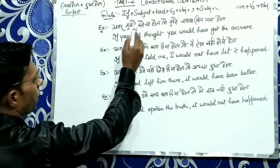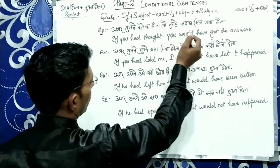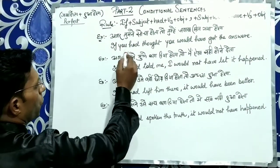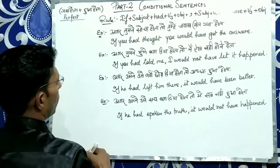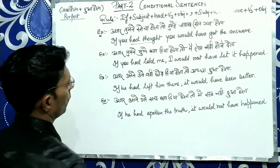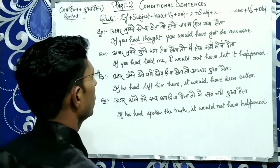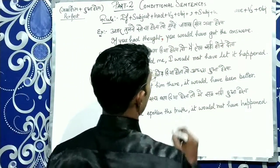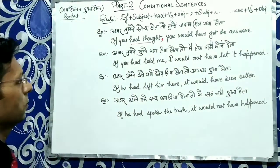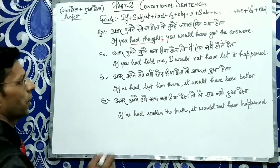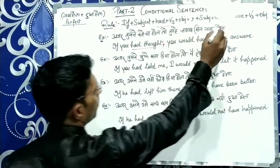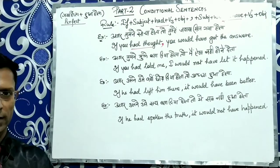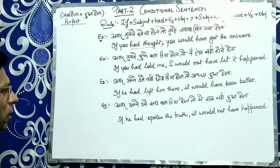Example: अगर तुम्हें सोचा होता तो तुम्हें जवाब मिल गया होता — If you had thought, you would have got the answer. So in this we use the combination: had plus third form, or would have plus third form. Keep this in mind — this is a perfect tense sense.